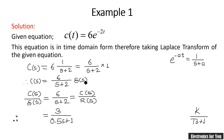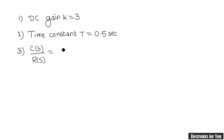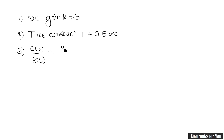Comparing with the standard equation, we get DC gain k = 3, and time constant T = 0.5 seconds. The transfer function is c(s)/r(s) = 3/(0.5s + 1). These are the first three results we needed to find.